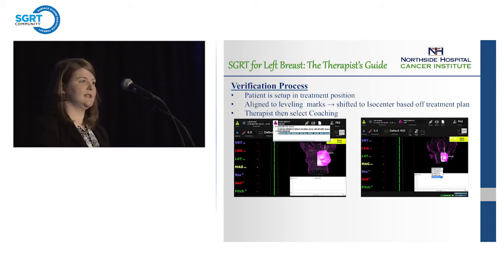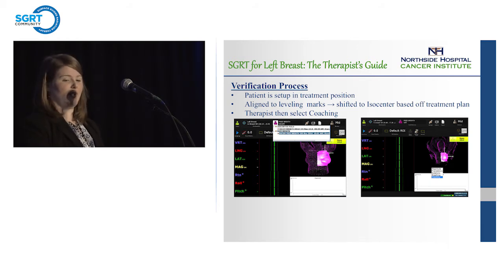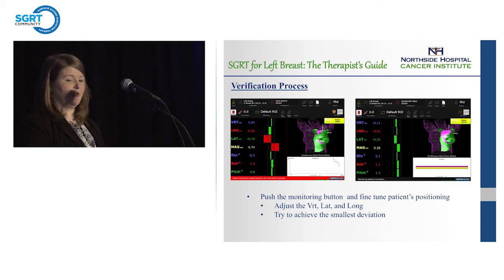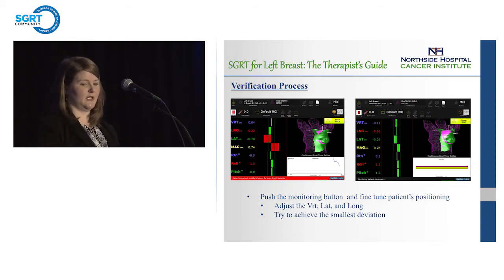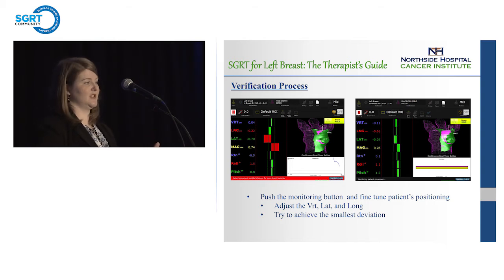During the verification process, the patient is set up to those marks and then we turn on AlignRT to make sure we are in the correct position. We shift around to make sure everything's perfect and try to get them as close to zero as possible, making sure that we're on coaching. The patient is on their free breathe DICOM and not yet in their correct position. We push the monitoring button, fine tune the patient's positioning, get it as close to zero as possible, then pause it. The patient should not be in position from free breathe to breath hold yet — you're going to have to ask the patient to take a breath in to achieve that breath hold position.